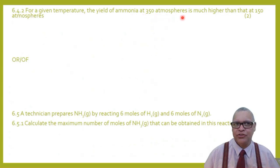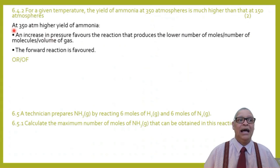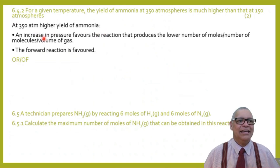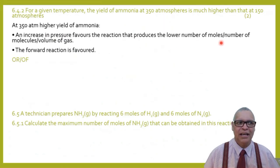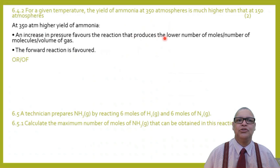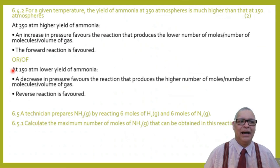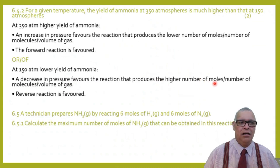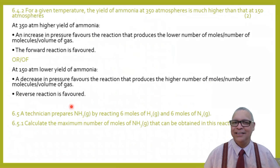Question 6.4.2: for a given temperature, the yield of ammonia at 350 atmospheres is much higher than at 150 atmospheres. When pressure increases, the system favors the reaction that produces the lower number of moles of gas. The forward reaction produces 2 moles of NH₃ from 4 moles of reactants — hence the forward reaction is favored at higher pressure, giving a higher yield.